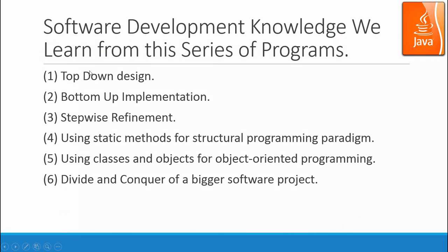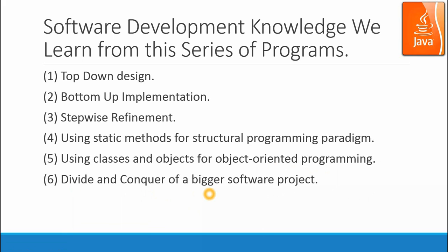Through this software development, I will show you knowledge about top-down design — how to break down a system from a top-down point of view — and then how to implement from smaller pieces with stepwise refinement, slowly improving the program. We first use static methods for structural programming and then convert to object-oriented programming. You can directly go for OOP if you already know it. We also use divide and conquer so the software can grow from smaller pieces to a larger piece, focusing on solving tough problems.